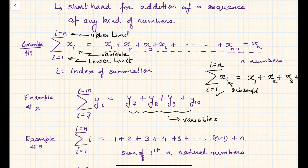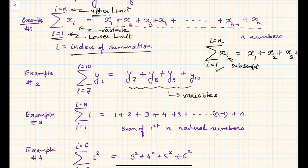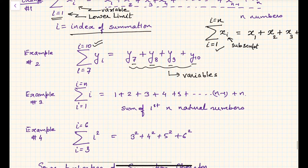Before that, a few definitions. i is the index of summation. i equals 1 is the lower limit, x_i is the variable, and i equals n is the upper limit. In example two, i varies from 7 to 10: y7 plus y8 plus y9 plus y10. You will not write y11 because the maximum upper limit is 10.